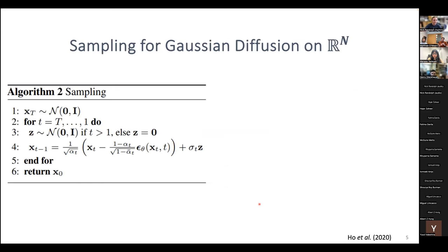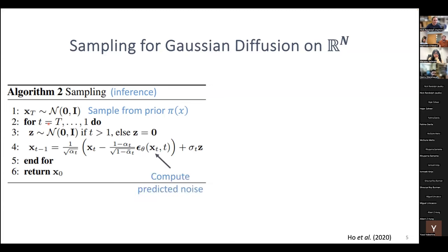Let's talk about that sampling procedure for Gaussian diffusion — this is also called inference. The first step is to sample from the prior: we have our normal distribution, a multivariate normal, that we sample from. Then we predict some noise with our neural network — how much noise we think was added to our image. We take a step to remove this noise, and eventually get some sort of denoised image. We repeat this for a number of time steps, usually pretty large — some early works used around a thousand. Eventually we get down to x-zero, which should look like our data distribution. This was really set up for images and a normal prior distribution, but how do we really do diffusion on protein backbones?